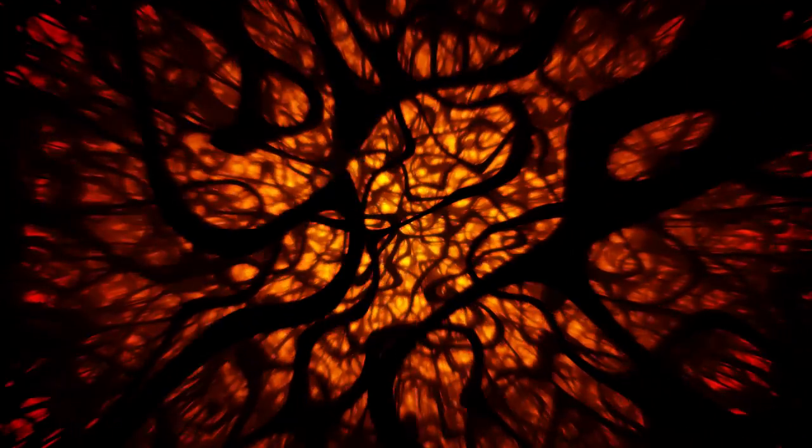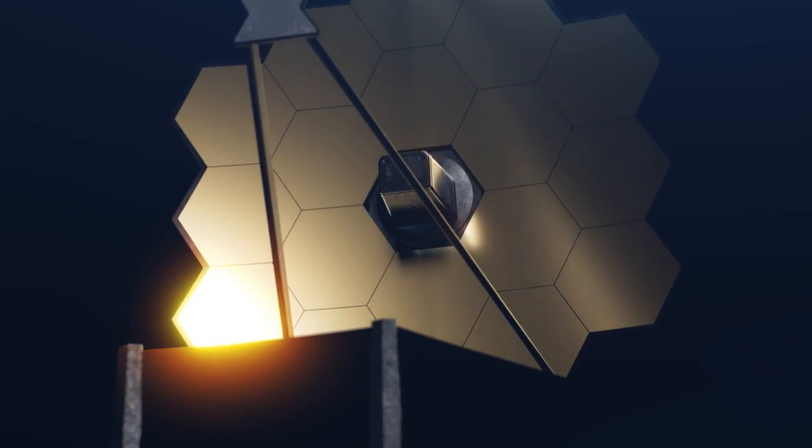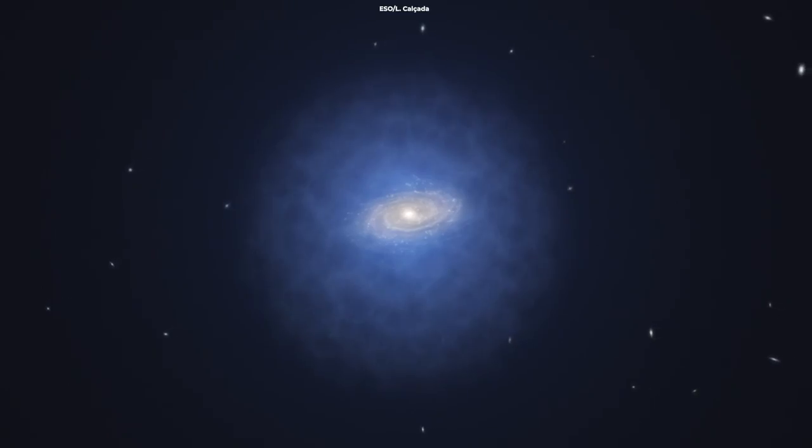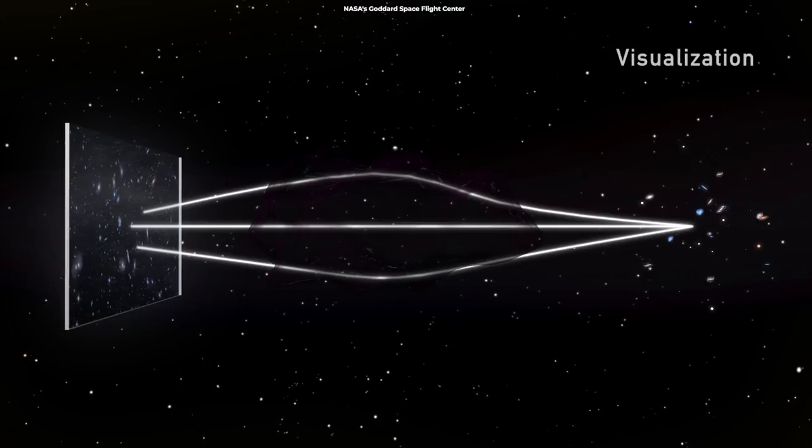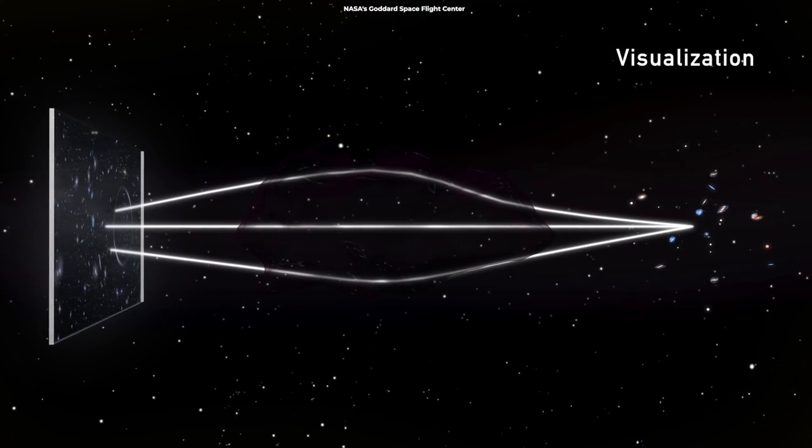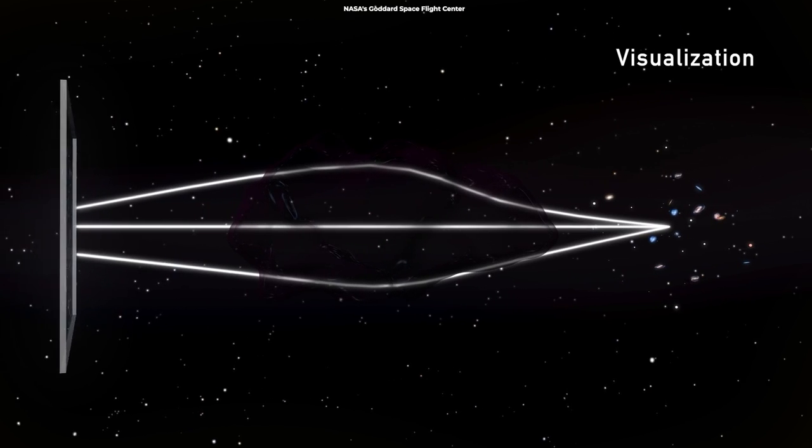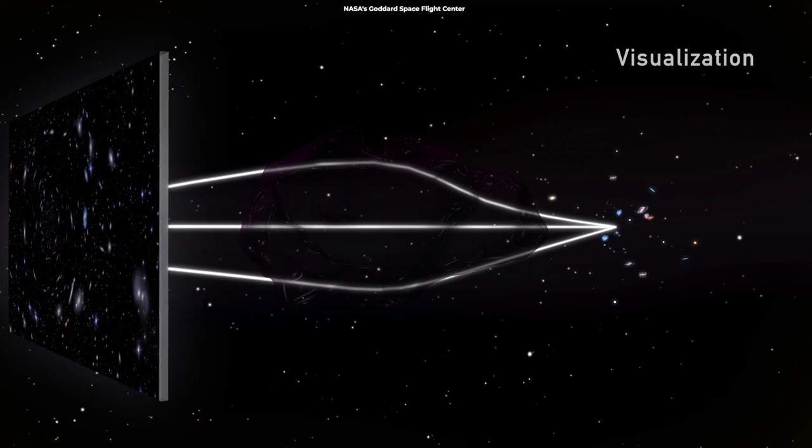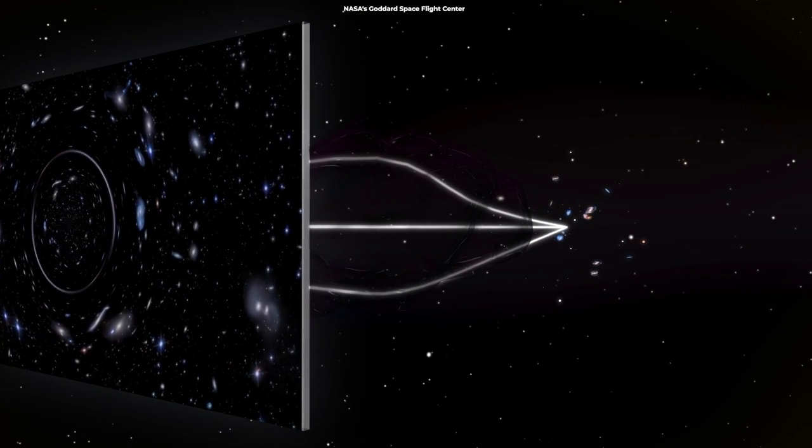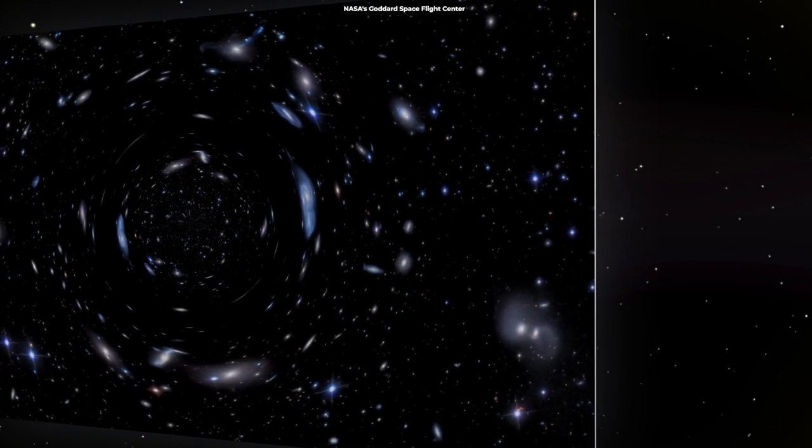Dark matter is a type of matter that we can't directly detect with our current instruments, but we know it exists because of the gravitational effects it has on visible matter, like galaxies and stars. Some physicists hypothesize that dark matter might be made of particles that we haven't yet discovered. Particles that don't interact with light or ordinary matter, and hence, are dark.